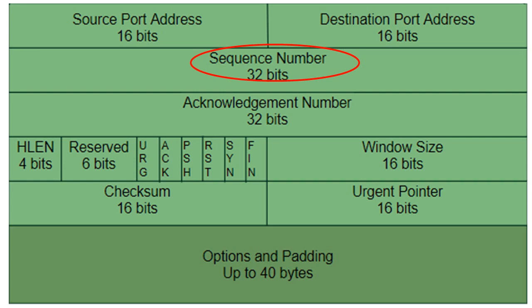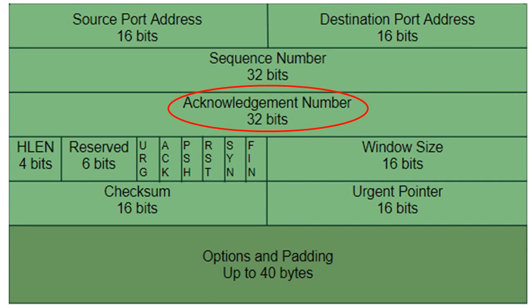The 32-bit sequence number field defines the number assigned to the first byte of data contained in a segment. The sequence number is a counter that keeps track of every byte sent across the network by a host. The 32-bit acknowledgement number is the next expected byte number — a counter to keep track of every byte that has been received. The acknowledgement number field holds the sequence number of the next byte the receiver is expecting.